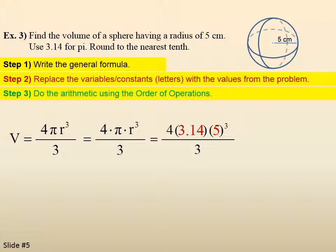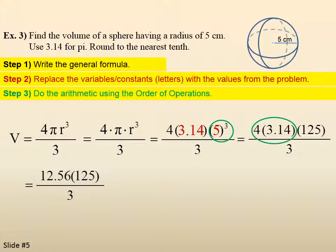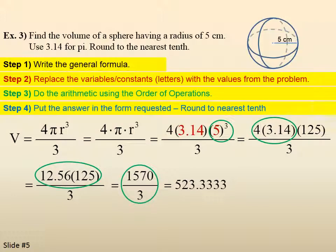Step 3. Do the arithmetic using the order of operations. So 5 to the third power gives us 125, so 4 times 3.14 times 125, all over 3. So 4 times 3.14 gives us 12.56. Then we multiply that times the 125, which gives us 1570 over 3. And it comes out to be 523.3333333.